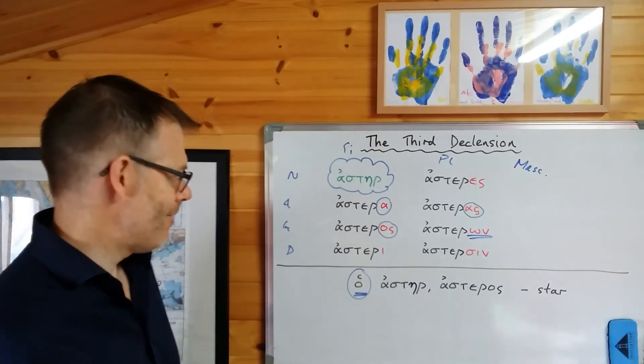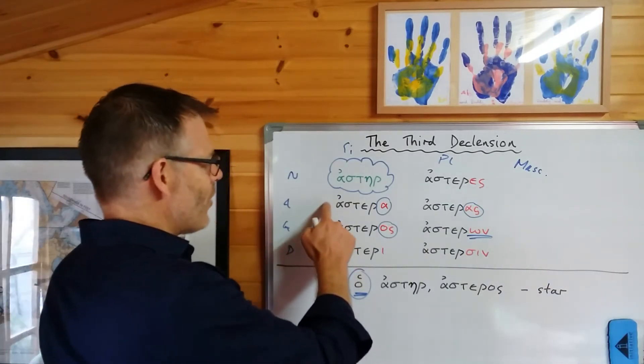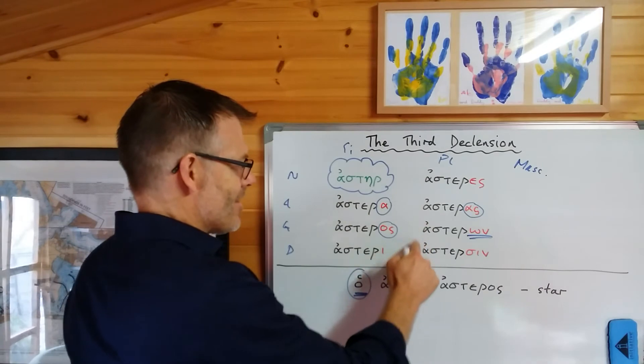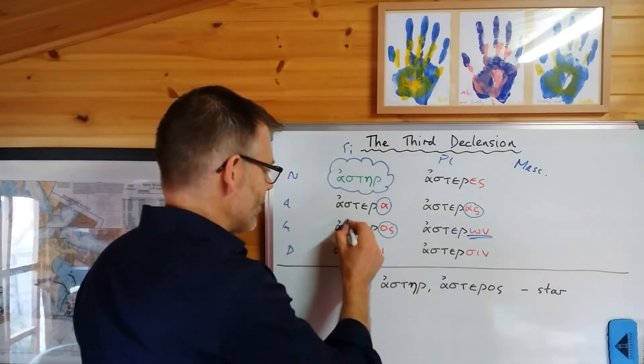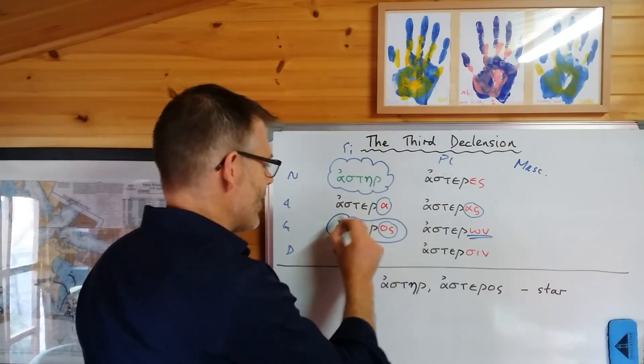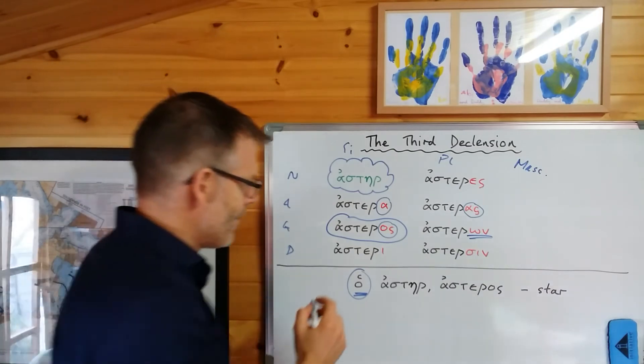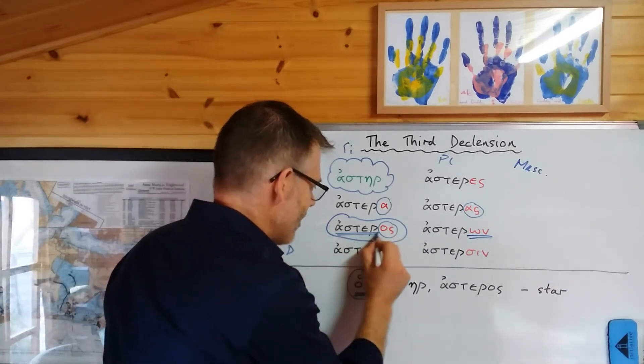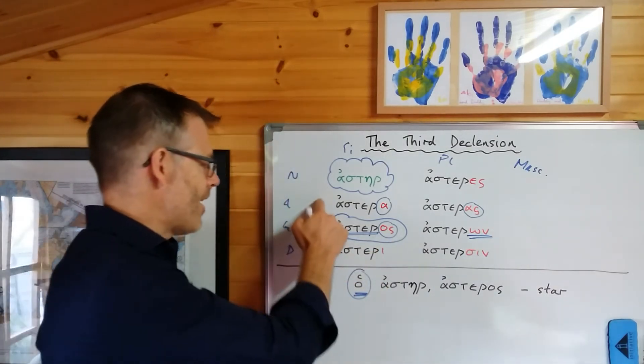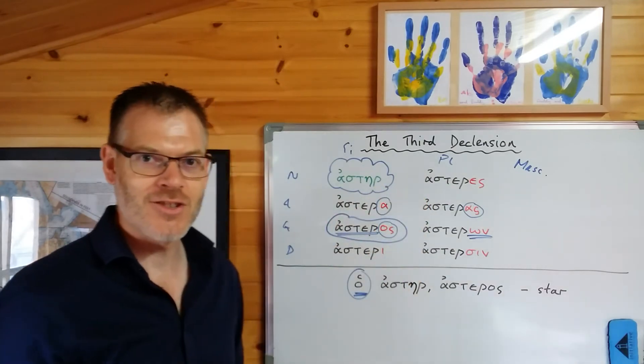When you learn a third declension noun, you actually have to learn two words. You have to learn a word which will tell you what the stem is. Well, conventionally, we learn the genitive singular because that gives you the stem.